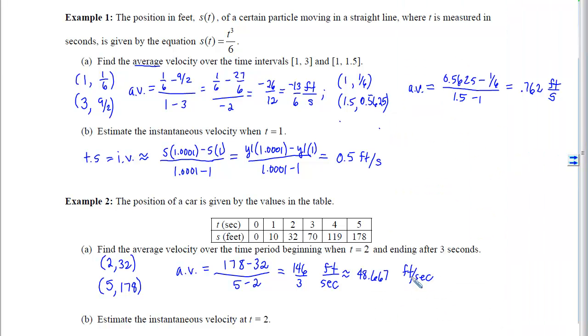Now with part B, we're estimating the instantaneous velocity when time is 2. So remember from objective 3 that when you're trying to estimate a tangent slope and all you have is data, you must use the flanking points. So in this case, we'll have 70 minus 10 over 3 minus 1. We get 60 over 2, or 30 feet per second. Approximately. Remember that we are just approximating that instantaneous velocity.